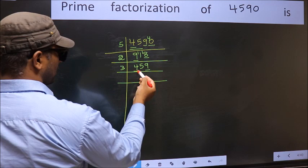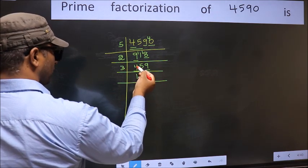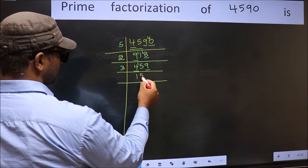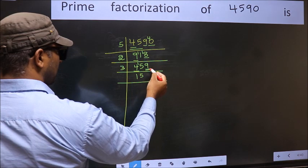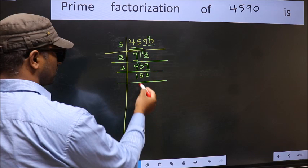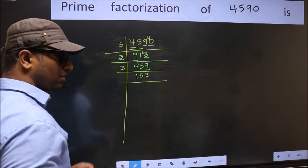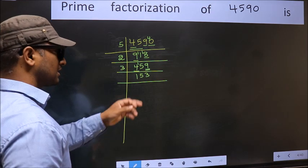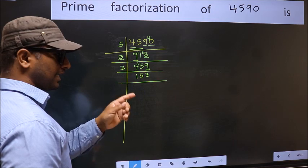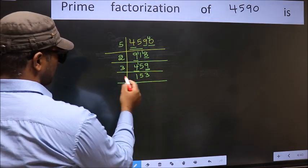So take 3 here. First number 4 — a number close to 4 in the 3 table is 3 ones 3. 4 minus 3 is 1, 1 carried forward: 15. When do we get 15 in the 3 table? 3 fives 15. The other number 9 — when do we get 9 in the 3 table? 3 threes 9. Now to check whether it is divisible by 3: add the digits. 1 plus 5 plus 3 equals 9, and 9 is divisible by 3, so this number is also divisible by 3.